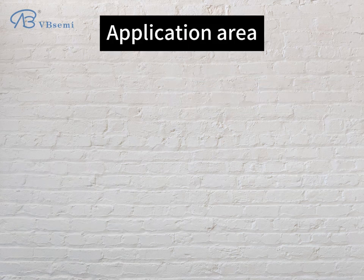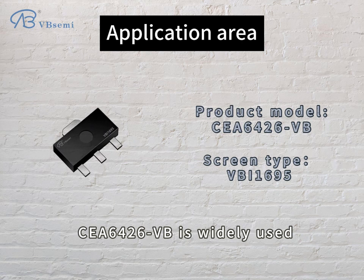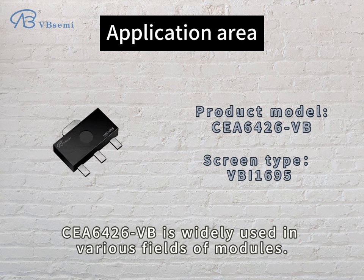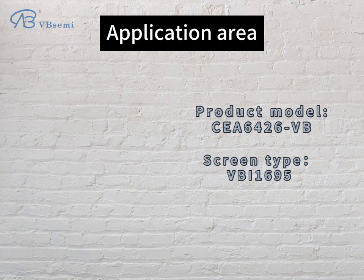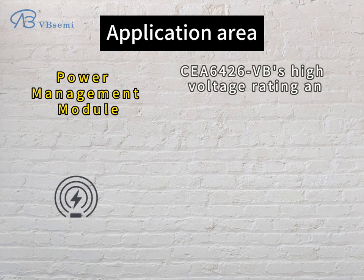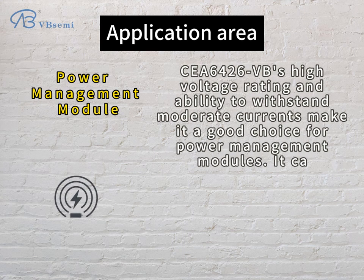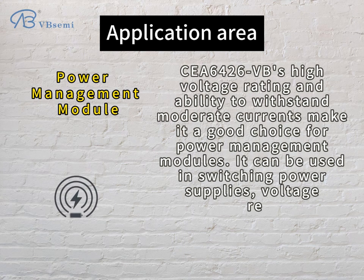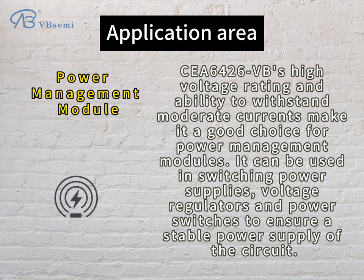Application areas: CEA6426VB is widely used in various module fields. For power management modules, its high voltage rating and ability to withstand moderate currents make it a good choice. It can be used in switching power supplies, voltage regulators, and power switches to ensure a stable power supply.